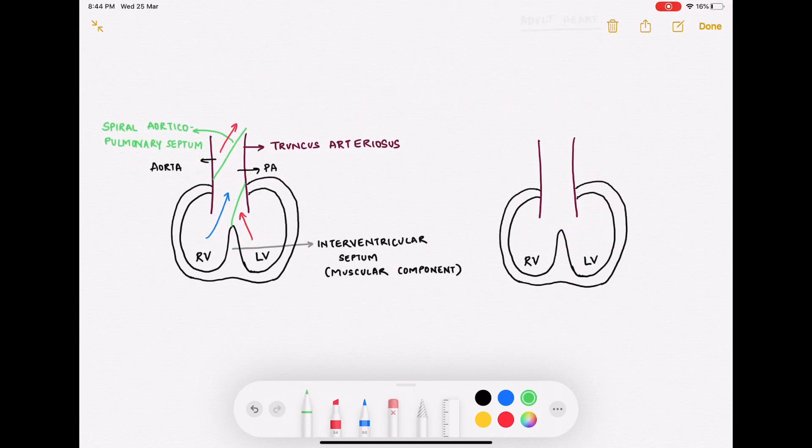Now let's keep the normal development on the left and see what is the error that leads to Tetralogy of Fallot. Well, in Tetralogy of Fallot, the development of septum happens a little like this - that is, a septum develops more anterior and to the right of the normal position. Let's magnify this diagram and see what is the consequence of this error.